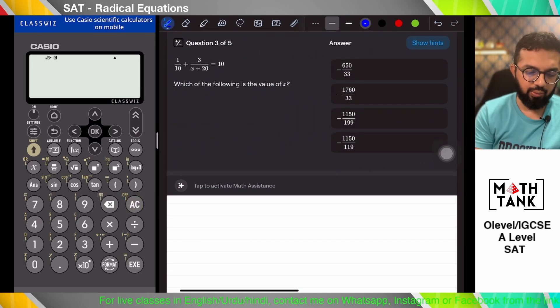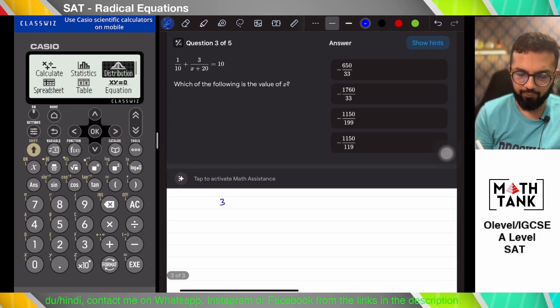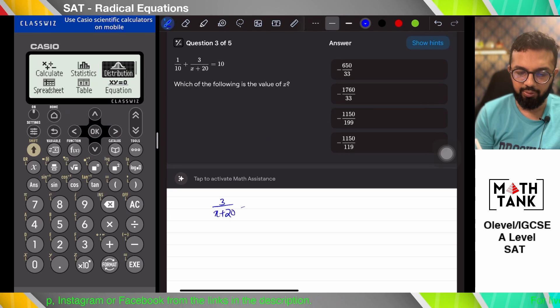This question again, I can do it with the solver. I can also do it manually. Let's try to do this one manually. But I can also do it with the solver, just like I did the previous one. 10 minus 110, so that's 99 over 10.